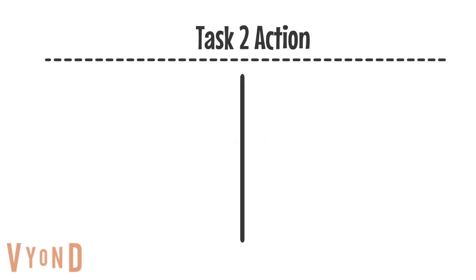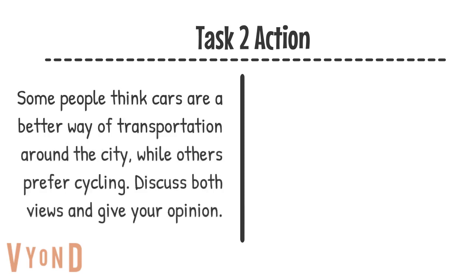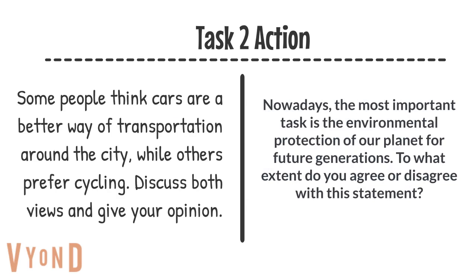Let me read to you the two most recently reported questions at IELTSblog.com to give you an idea. The first is: some people think cars are a better way of transportation around the city while others prefer cycling. Discuss both views and give your opinion. And the second is: nowadays the most important task is the environmental protection of our planet for future generations. To what extent do you agree or disagree with this statement? So these task 2 question types won't be new to you. You can see the first is a very clear request for discussion, and of course you're going to respond to this using a discussion essay structure. And the second clearly requires an argument essay.